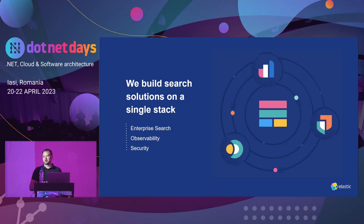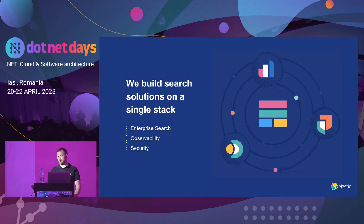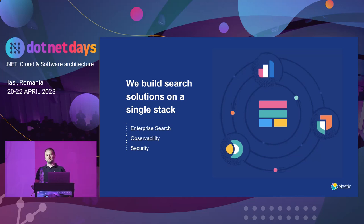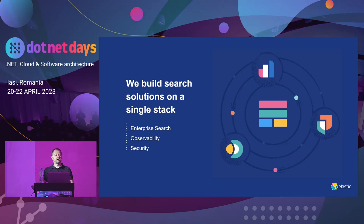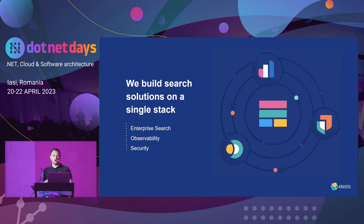To give a summary of what we offer out of the box: we have a product called Enterprise Search, which is mostly focused around accessing data within your organisation and ensuring you can find things across all the disparate systems you may be running — GitHub repositories, Salesforce, Slack, Google Drive, etc. With Enterprise Search, you can index all of that data across all those sources to have a single point of search. We also do web crawling and app search.